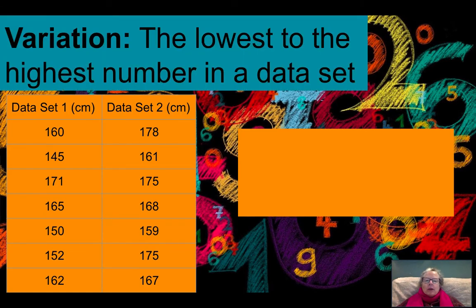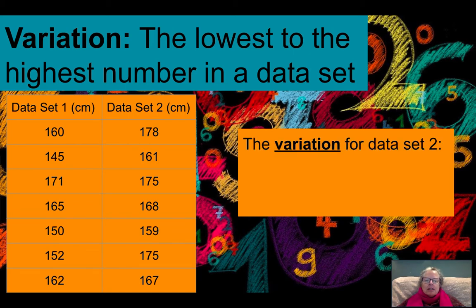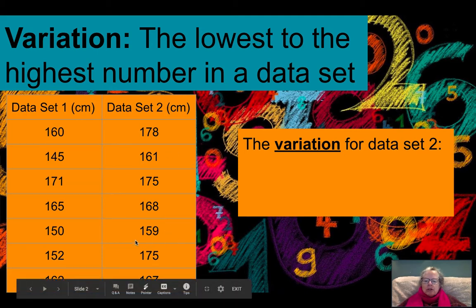So when you're talking about variation, what you want to say is the lowest number to the highest number in a data set. So let's take a look at data set 2. And if we look over here,